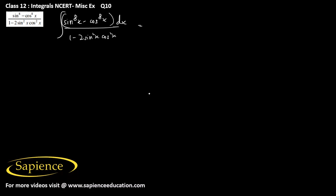We are asked to integrate (sin⁸x - cos⁸x) divided by (1 - 2sin²x·cos²x) dx.